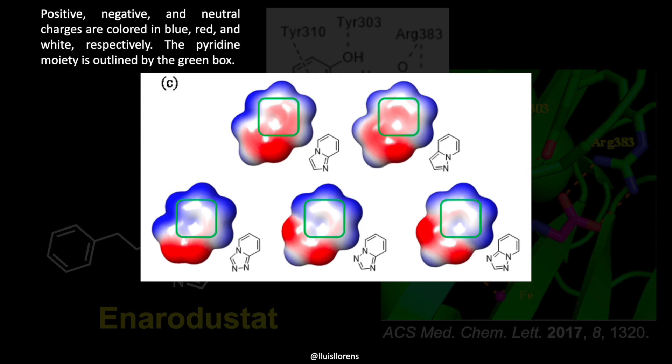As you can see in this electrostatic potential map of five-six fused ring systems, the pyridine rings fused to triazoles were found to be more electron-deficient than those fused to an imidazole or a pyridine ring. The red color within the green box denotes a negative charge, while the white color is coded for a neutral charge. Therefore, triazolopyridine was considered more favorable as a stacking counterpart with the electron-rich phenol of tyrosine.